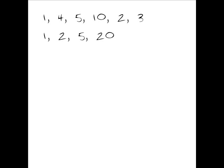So you replace the pair with 2 and 20, then keep going. For 20 and 2, the greatest common divisor is 2 and the least common multiple is 20, and so on. What this problem says is that eventually this process will stop, and you have to prove that it stops.